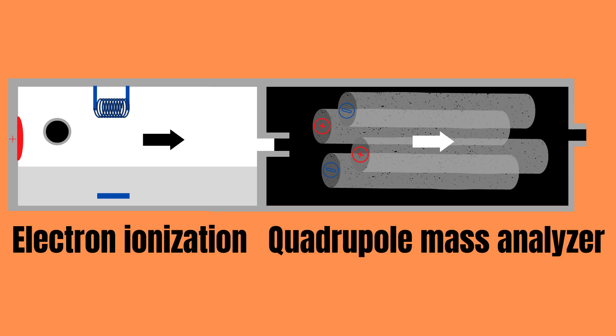In the case of GC-MS, one common mass spectrometry method is quadrupole mass spectrometry. In a nutshell, the sample is first ionized using electron ionization, which is basically just bombarding the sample with electrons until it ionizes.